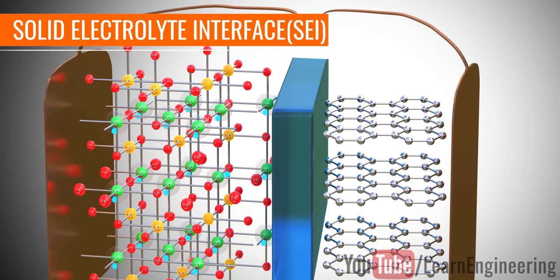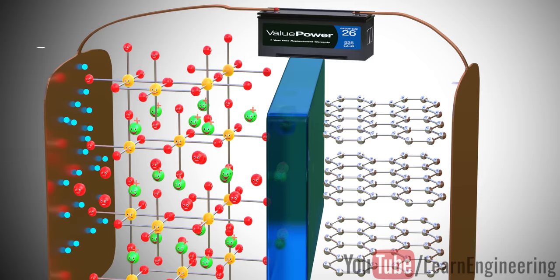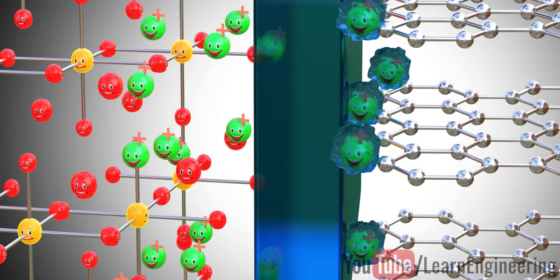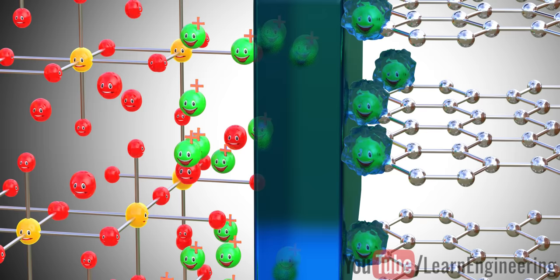When you charge the cell for the first time, as explained above, the lithium ions move through the electrolyte. Here, in this journey, solvent molecules in the electrolyte cover the lithium ions. When they reach the graphite, the lithium ions, along with the solvent molecules, react with the graphite and form a layer there called the SEI layer.